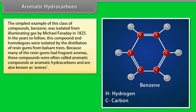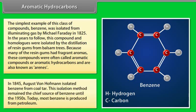Because many of the resin gums had fragrant aromas, these compounds were often called aromatic compounds or aromatic hydrocarbons, and are also known as arenes. In 1845, August von Hoffman isolated benzene from coal tar. This isolation method remained the chief source of benzene until the 1950s. Today, most benzene is produced from petroleum.